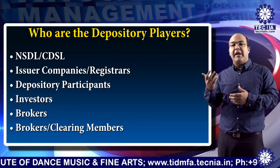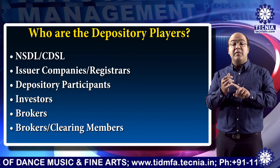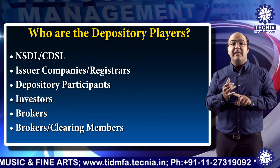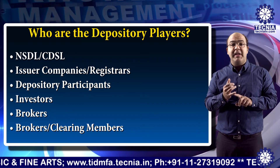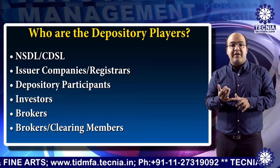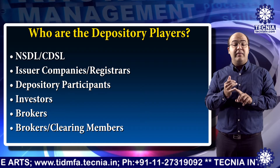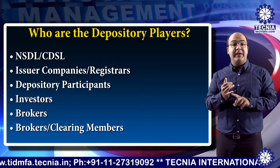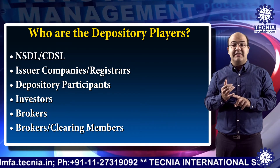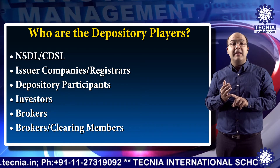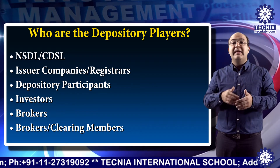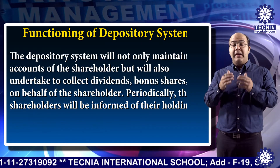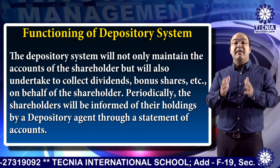Now we will discuss who are the depository players. The first one is NSDL and CDSL. Second are issuer companies or registrar. Third are depository participants. Fourth are investors. Fifth are brokers. Sixth are clearing members.